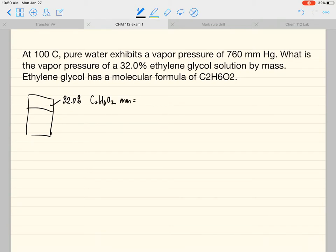We can figure out what its molar mass is by adding up the molar masses in the periodic table of two carbons, two oxygens, and six hydrogens. And we get a molar mass of 62.07.